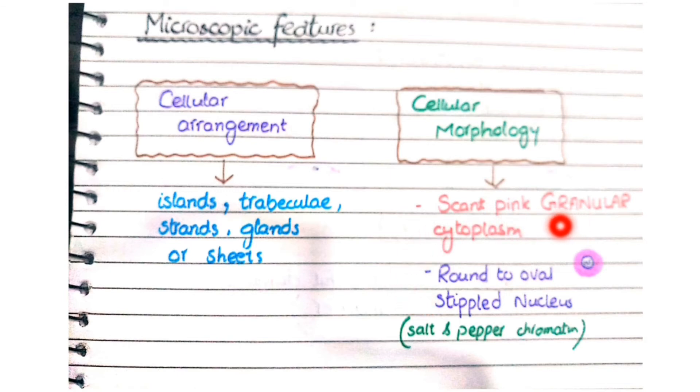The cytoplasm is rich in granules. You can see here that the cytoplasm is abundant in small eosinophilic granules. The cytoplasm is pink and granular, and the nucleus is round to oval in size, just like this, and has a stippled appearance.